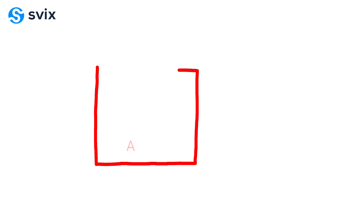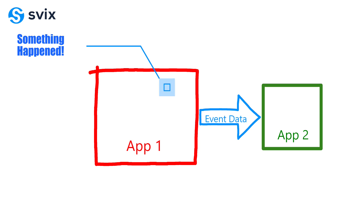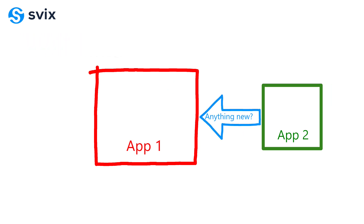With webhooks, the application that wants the update will provide the source application with an endpoint, and they'll say, anytime something happens over there, send us an event update to this endpoint. Whereas with API polling, the application that wants to receive the update needs to consistently pull the API of the other application to find the event themselves.